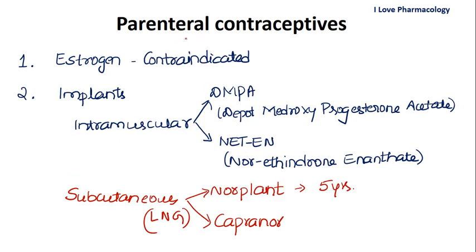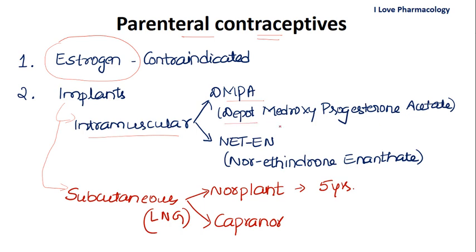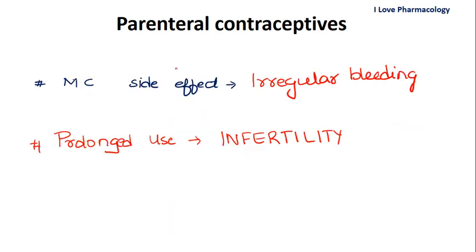Parenteral contraceptives are used when the estrogen component is contraindicated. Implants are given through intramuscular or subcutaneous routes. Intramuscular implants include DMPA (depot medroxyprogesterone acetate) and norethindrone enanthate. Subcutaneous implants include Norplant and Capronor, which are derivatives made up of levonorgestrel. Norplant stays in the body for up to five years. The most common side effect of parenteral contraceptives is irregular bleeding, and prolonged use can cause infertility, which may be permanent.